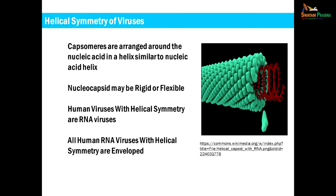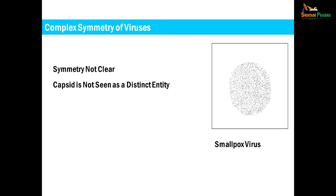The other type of symmetry seen in viruses is helical symmetry. In helical symmetry, the capsomeres are arranged around the nucleic acid in the form of a helix, similar to the nucleic acid helix. The nucleocapsid in helical symmetry may be rigid or flexible. All human pathogenic viruses with helical symmetry are RNA viruses, and all RNA viruses with helical symmetry are enveloped viruses. There are certain viruses where the symmetry is not clear — this is known as complex symmetry. In complex symmetry, the capsid cannot be made out distinctly; it is buried deep inside the virus structure. This is seen in pox viruses — smallpox virus is an example.